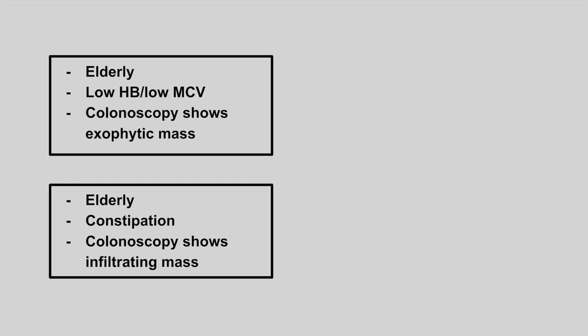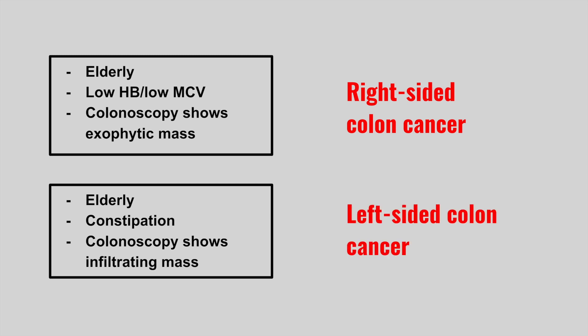The next patient is an elder with low hemoglobin, low MCV, and colonoscopy shows an exophytic mass — this is right-sided colon cancer. The next condition is an elder with constipation and colonoscopy showing an infiltrating mass — this is left-sided colon cancer.